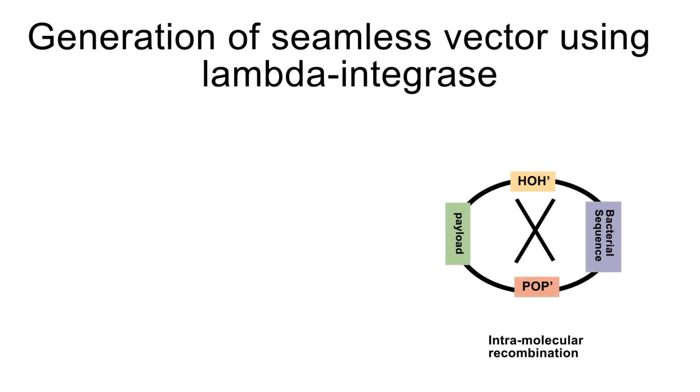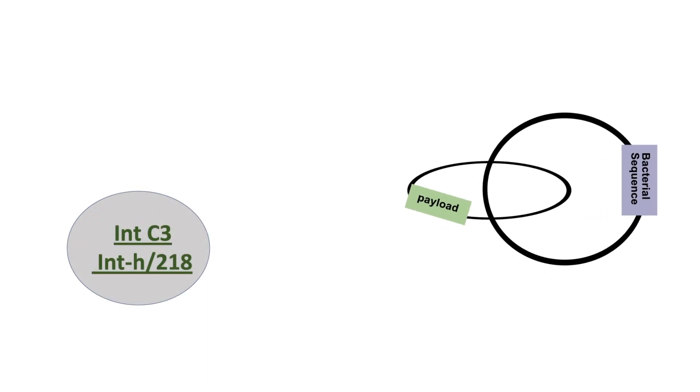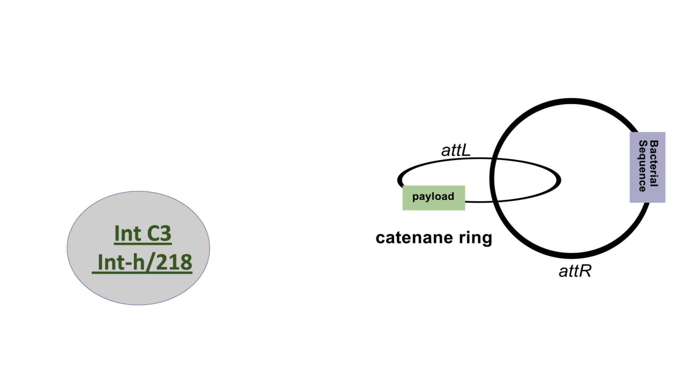Recently, we have used lambda integrase platform to carry out in vitro intramolecular recombination within a plasmid to generate two catenane rings, out of which a ring with bacterial sequences is cleaved, thus eliminating prokaryotic sequences from the plasmid.